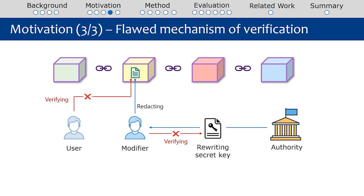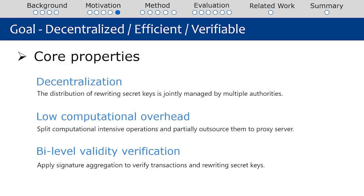Additionally, most existing work is flawed from a lack of a verification mechanism. The user cannot verify the validity of modified transactions, and the modifier cannot check the validity of rewriting secret keys received from the authority. In order to address these limitations, we propose a blockchain rewriting scheme with useful properties of decentralized, efficient, and verifiable.